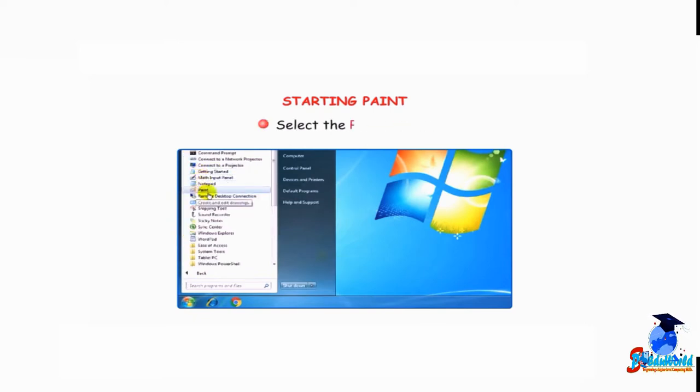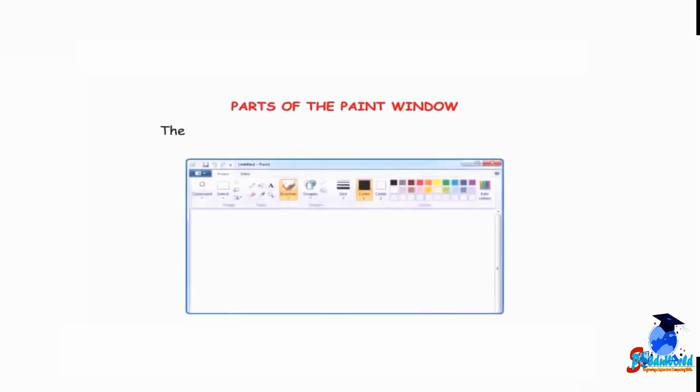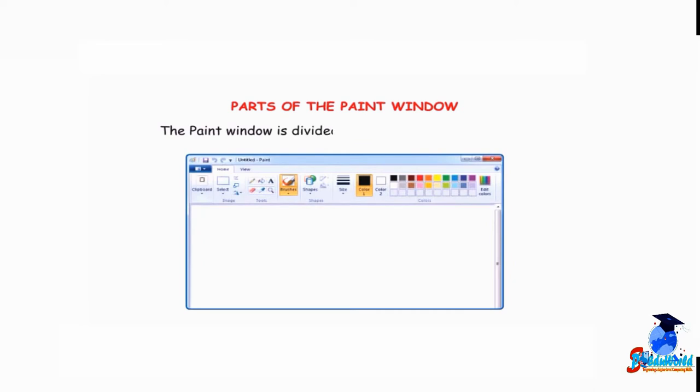Select Paint. The Paint window is divided into the following main parts.